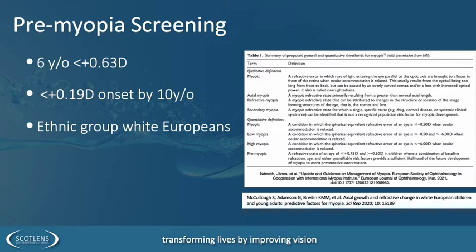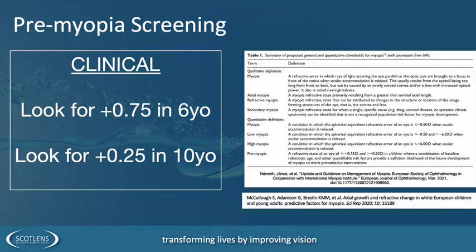Should we therefore be doing cycloplegic autorefraction on all six-year-olds and ten-year-olds? Possibly, but I prefer to keep the environment fun for children, so I'll only use drops if necessary. What I tend to do now with six-year-olds is put plus 0.75 into the trial frame, let accommodation settle, and check whether the subjective visual acuity comes up — just as an indicator, not to initiate any treatment at this stage, doing the same at age 10. That's pre-myopia.